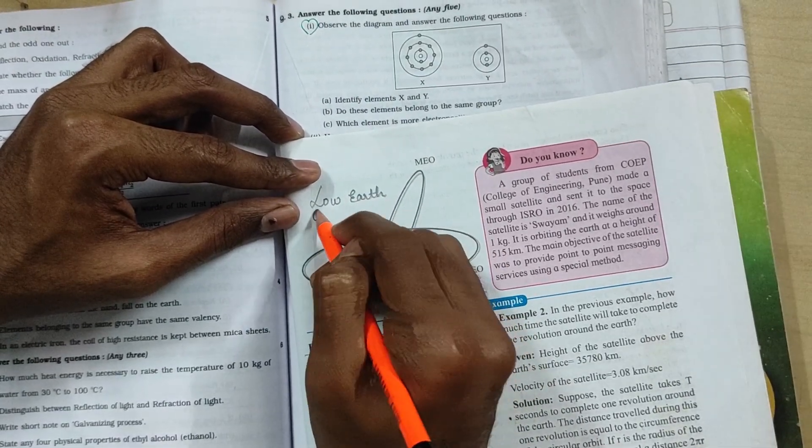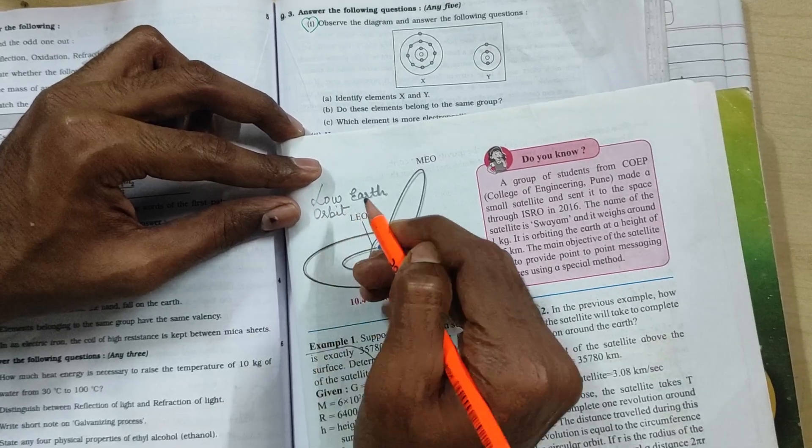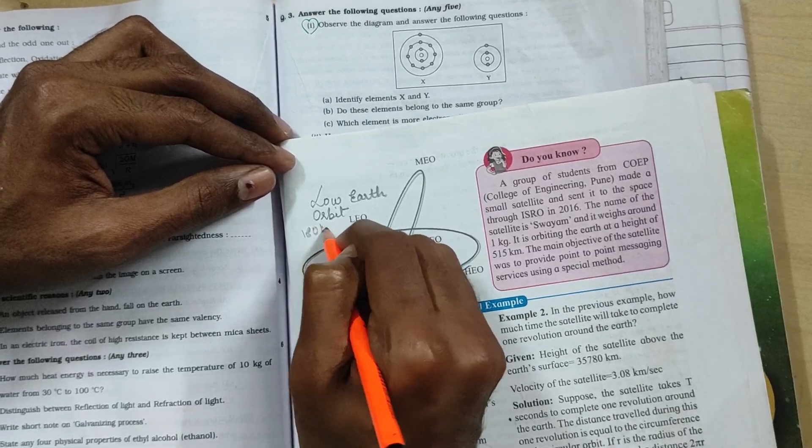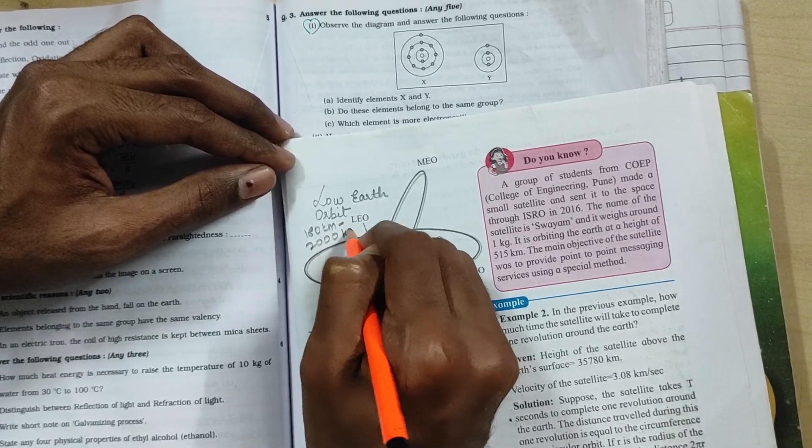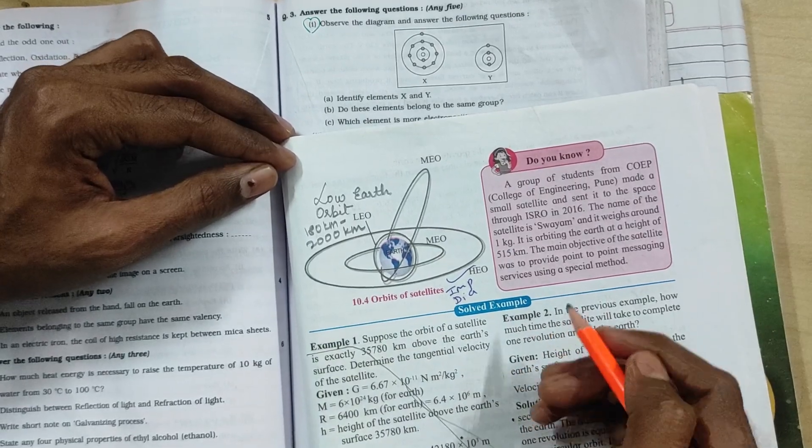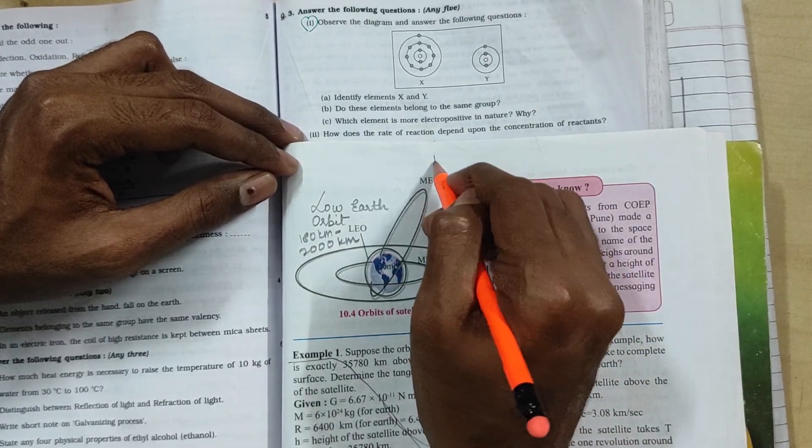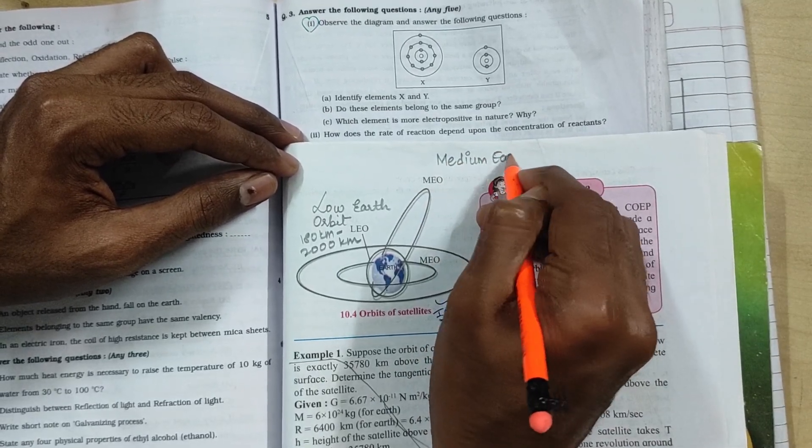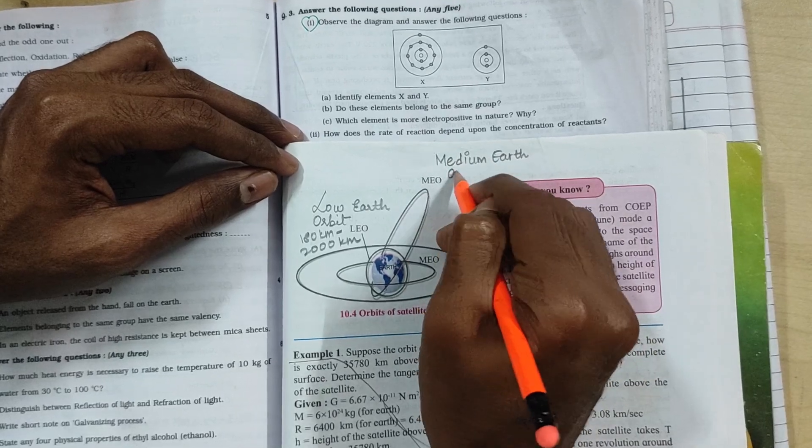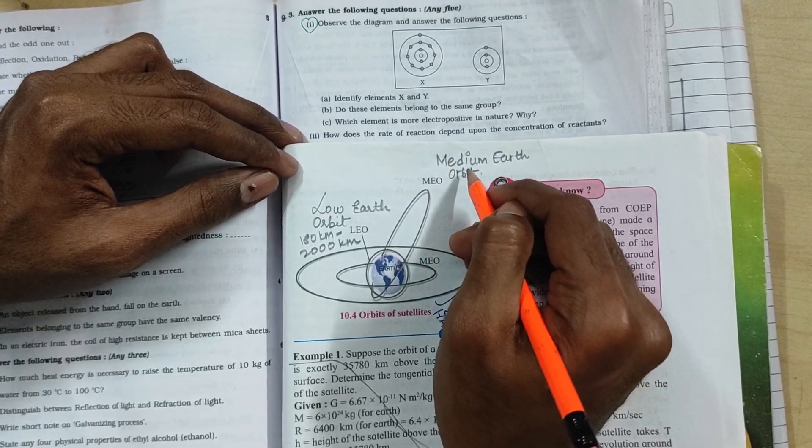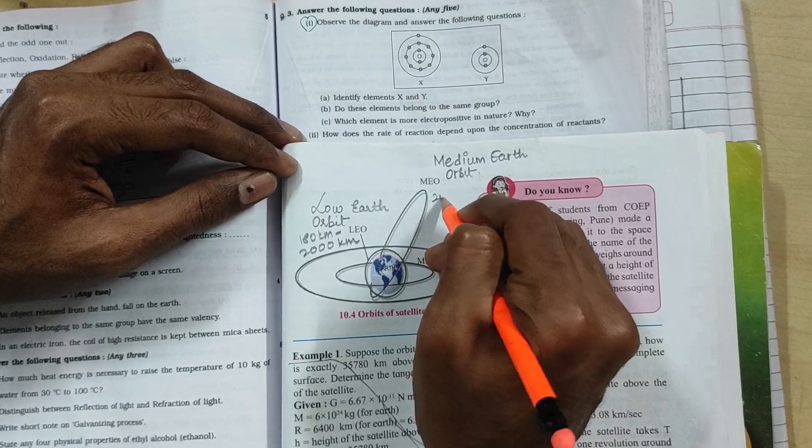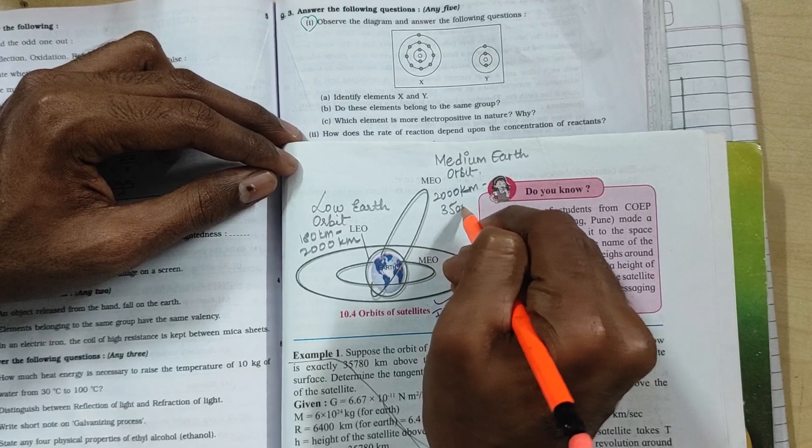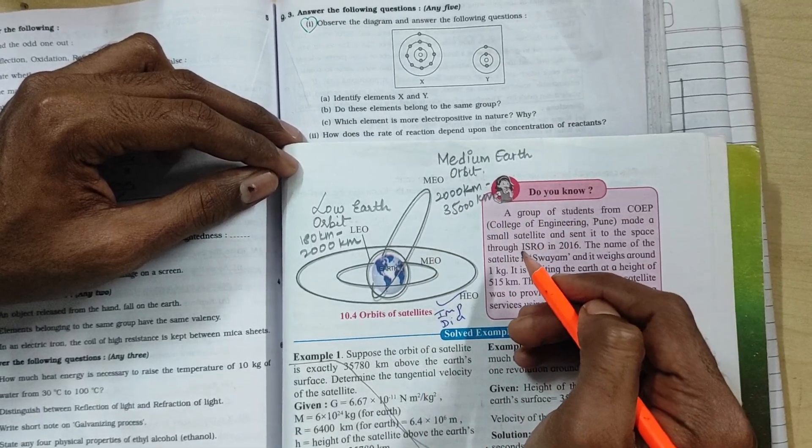Low Earth orbit - satellites in low Earth orbit revolve in the range of 180 kilometers to 2000 kilometers. Then we have medium Earth orbit. M-E-D-I-U-M. Medium Earth orbit satellites revolve from 2000 kilometers to 35,000 kilometers.